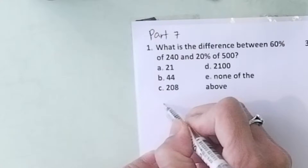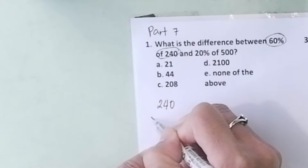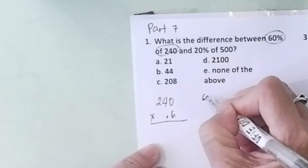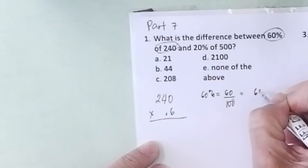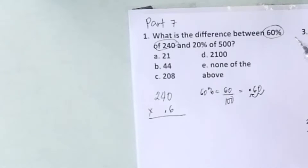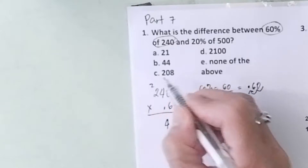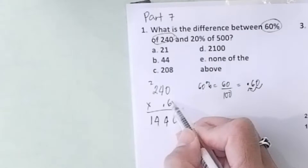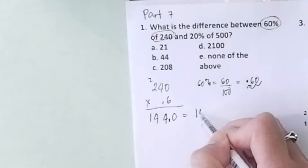You get 60% of 240 — that is simply 240 times 0.6. Remember, 60% is just 60 per 100; move the decimal point 2 places to the left to get 0.6. So 0.6 times 4 is 24, carry 2; 6 times 2 is 12, plus 2 is 14. One decimal place — so we have 144.